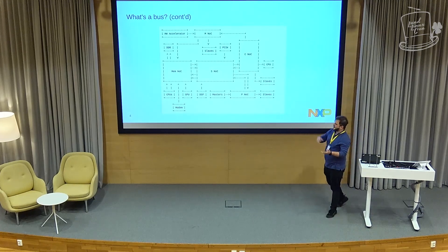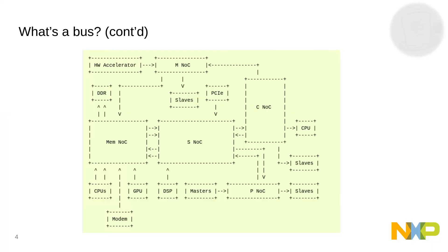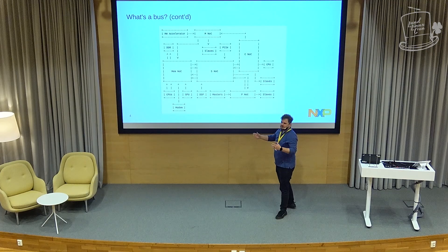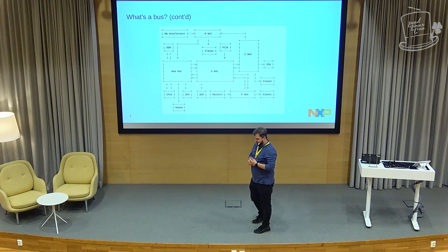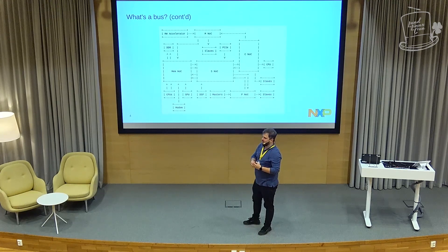Since I don't have the system bus diagram, I used something from the interconnect documentation in the kernel, which shows a hypothetical SOC. We have CPUs, GPU stuff, DDR, and a lot of NOCs — Network on Chip. There are five of them: Memory NOC, SNOC, CNOC, MNOC, and PNOC. A NOC basically behaves like an intersection for all the buses that need to go around the SOC.